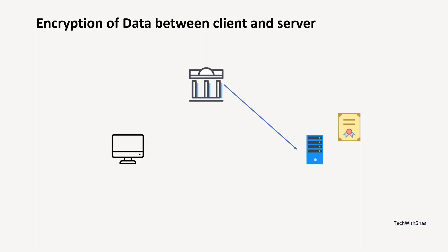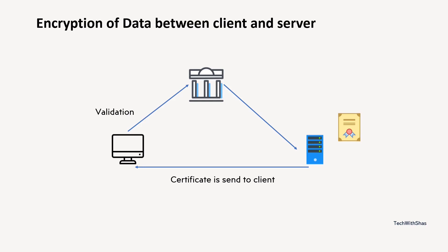Then whenever a client wants to interact with this server, this certificate is sent to the client. The client will receive the certificate, read it, and verify it with the CA authority. Once the client is satisfied that the server presenting the certificate is the same server, it begins the handshake with that server. Once the identity of the server is established, both can handshake and exchange information. What we have seen so far is a simplified form of what actually happens — so now let us dive into one-way TLS and MTLS.